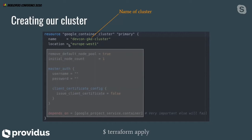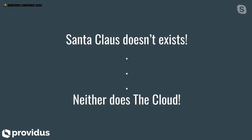Terraform is a tool which allows us to write not code, but JSON-like structures. What we are going to do is create a Google container cluster. We are going to name it DevConGK cluster. And you see — why do we have a location for the Kubernetes cluster? Isn't the cloud just magic?